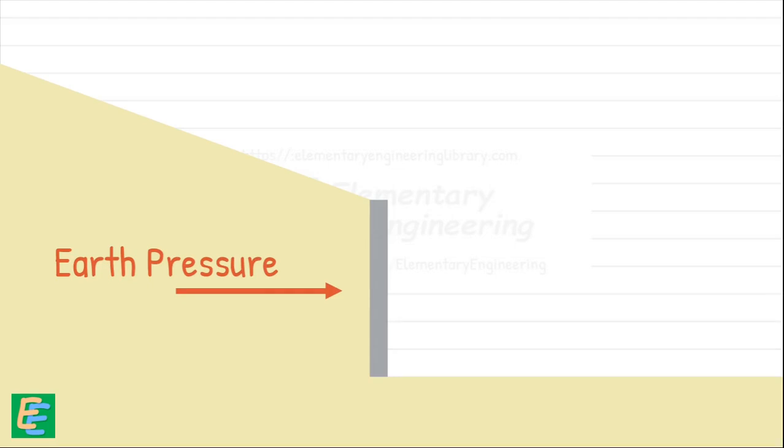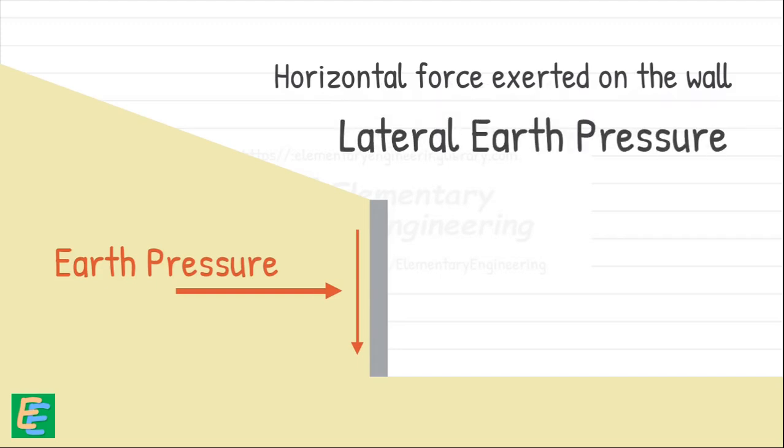However, the term earth pressure can sometimes cause confusion as it could refer to either vertical or horizontal or both the forces exerted by the soil. To be more specific, the horizontal force exerted on the wall is called lateral earth pressure.